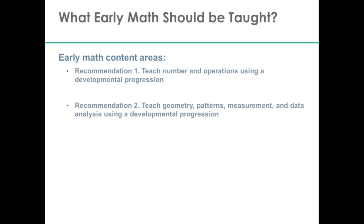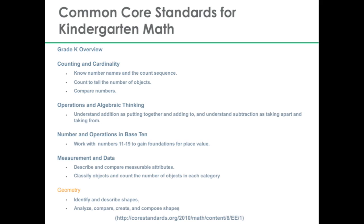Now let's turn back and go to the beginning of the recommendation list and talk a bit about the actual early math content and what we're proposing that young children should have experience with. The first recommendation is for number basically, and the second recommendation covers other areas of math that are equally important but don't have quite as much research about them. I would like to say that there's good alignment between the recommendations in the practice guide and the Common Core standards for kindergarten math.